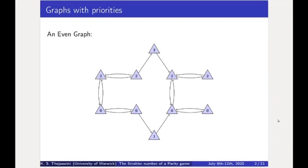I will talk about even and odd graphs. The graphs we will consider are directed graphs along with a labeling for each vertex from natural numbers. This labeling we call priorities throughout this presentation. An even graph is a graph in which every cycle is even. An even cycle is one where the highest priority of all the vertices occurring in the cycle is even. Consider this simple cycle with just two vertices. The priorities occurring in this cycle are two and zero, and the highest among them is two, which is even. Therefore, we call this an even cycle.